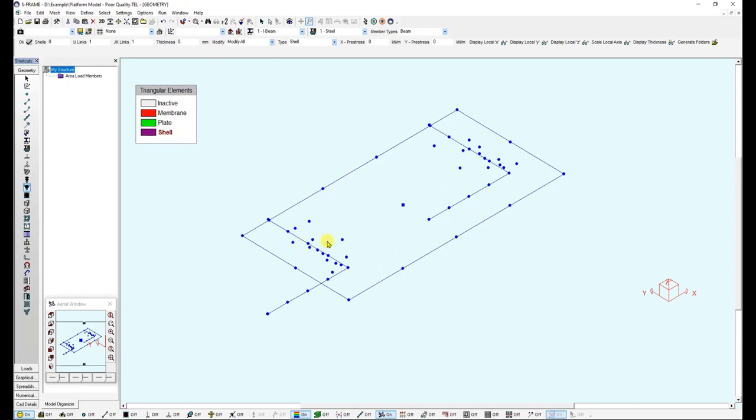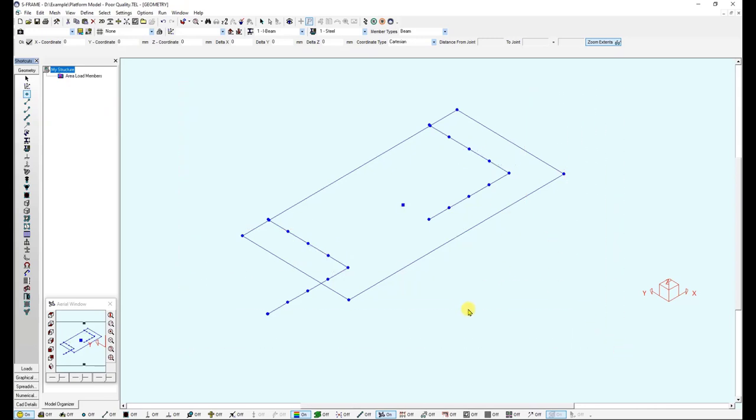To delete the generated nodes for those shells, I just need to go to the Joint Tool, hold Control, and drag my mouse. And this is the original configuration.